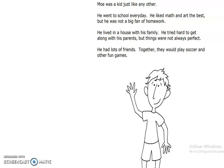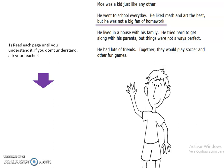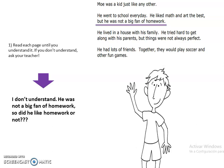Look at the first page and the first tip. It says, read each page until you understand it. And if you don't understand, ask your teacher. Now, look at this part of the sentence. It says that he was not a big fan of homework. This might be confusing — was he a fan of homework or not? Did he like homework or not? So, if you find more confusing sentences, please ask your teacher.